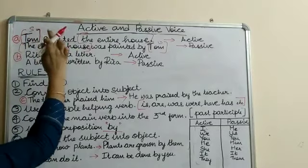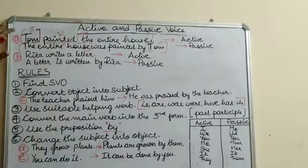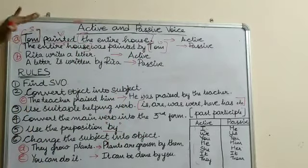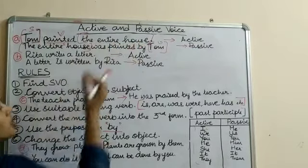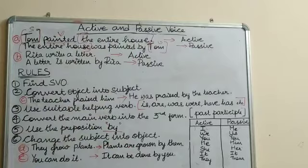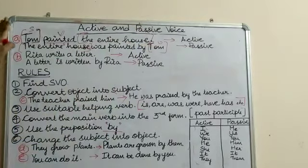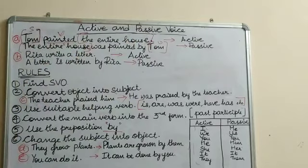Tom is the one who does this action — Tom is the performer of the action, and the entire house is the receiver of the action. So when the performer of the action is the subject and the receiver of the action is the object, then the sentence is in the active voice.